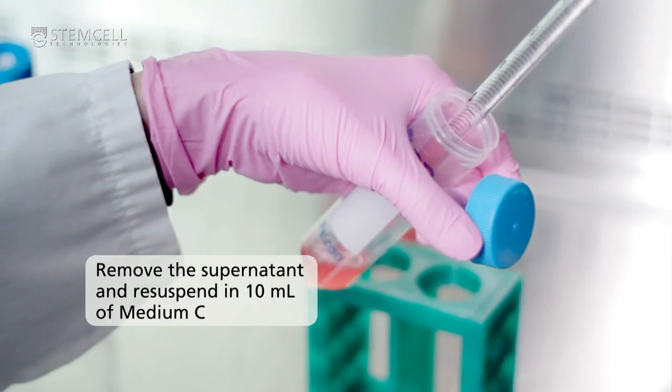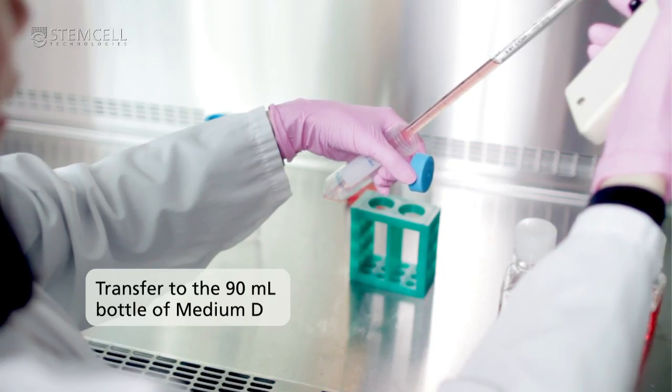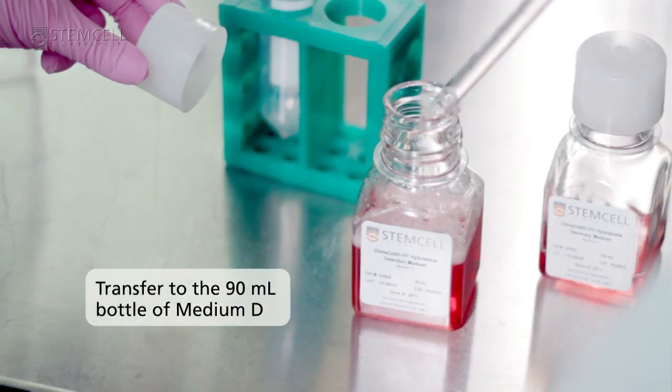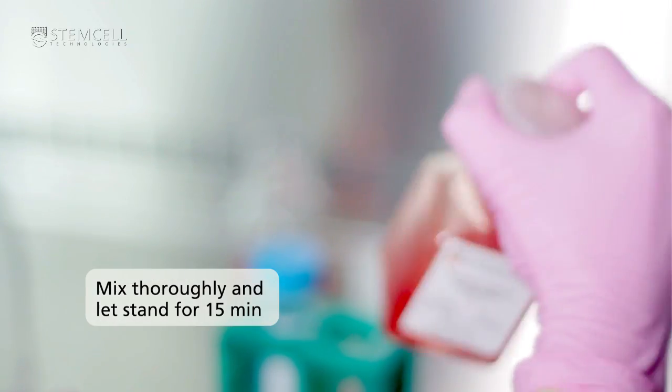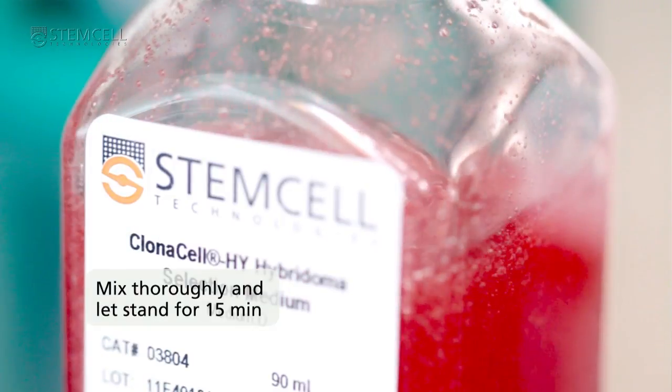Transfer the 10 mils of cells and medium C into the 90 mil bottle of medium D. Mix thoroughly and let the bottle stand for approximately 15 minutes so the bubbles rise to the top.